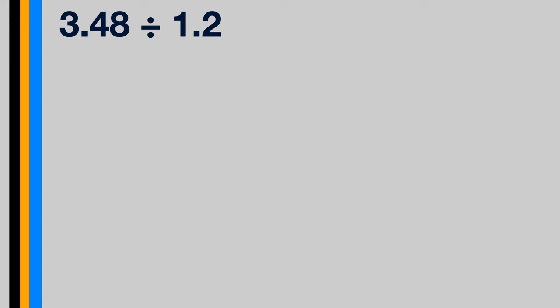3 and 48 hundredths divided by 1 and 2 tenths. How do we solve that? Remember when we divide by decimals, we are to move the decimal point in our divisor to make that a whole number.